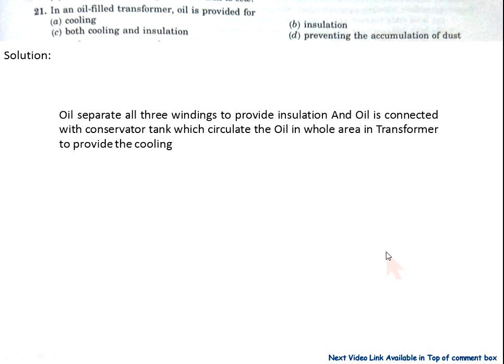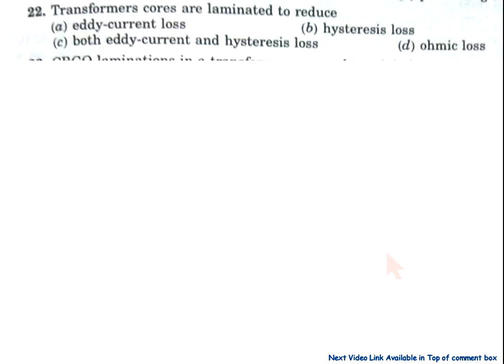Transformer cooling is provided by the conservator tank which circulates oil throughout for cooling and insulation. The oil also separates all three windings from the body. So both cooling and insulation are provided by the oil. Therefore option C is correct. Now come to question number 22.